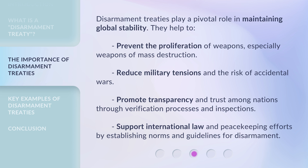Disarmament treaties play a pivotal role in maintaining global stability. They help to prevent the proliferation of weapons, especially weapons of mass destruction, reduce military tensions and the risk of accidental wars, promote transparency and trust among nations through verification processes and inspections, and support international law and peacekeeping efforts by establishing norms and guidelines for disarmament.